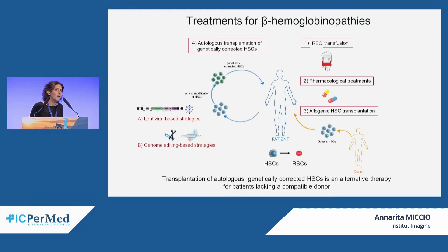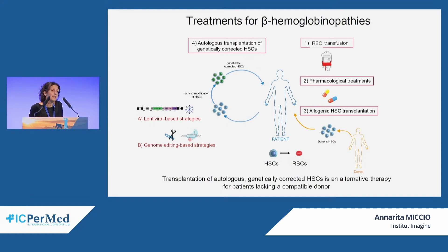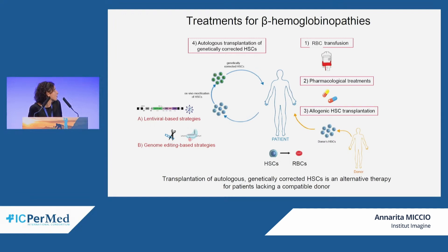For patients lacking a compatible donor, an alternative promising strategy is gene therapy, currently based on transplantation of patient-derived, genetically corrected hematopoietic stem cells. This approach was initially based on the use of lentiviral vectors inserting and integrating a wild-type beta-globin transgene into hematopoietic stem cells. In recent decades, many genome editing approaches have been developed — some already in clinics — most using the CRISPR-Cas9 nuclease system, but also novel strategies using base editors.